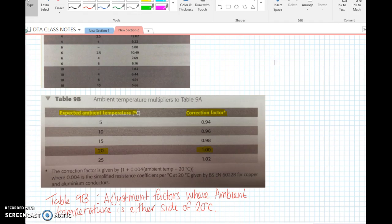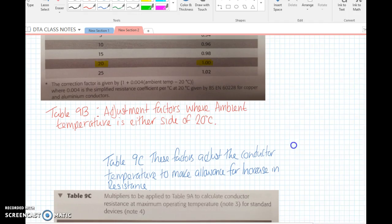The next table, 9b in the on-site guide, covers ambient temperature adjustments. The cables are based at 20 degrees. If you're operating at higher temperature, like 30 degrees, you can see it goes to 1.01, 1.02, 1.04. If it's installed outdoors in a cool place, you could de-rate the cable to 0.98, so the resistance will be less.